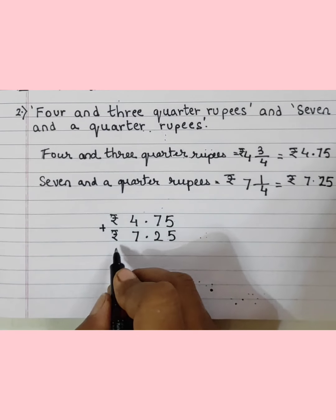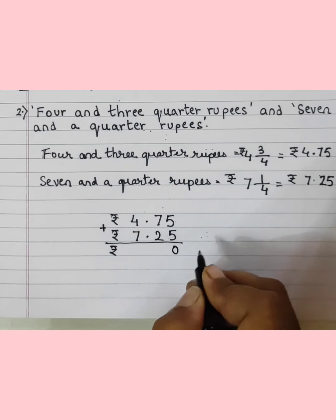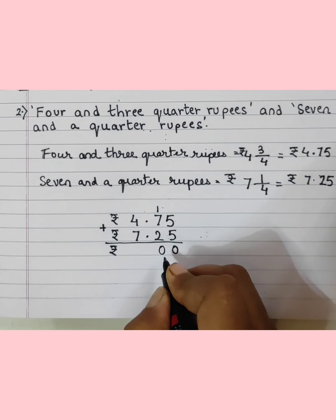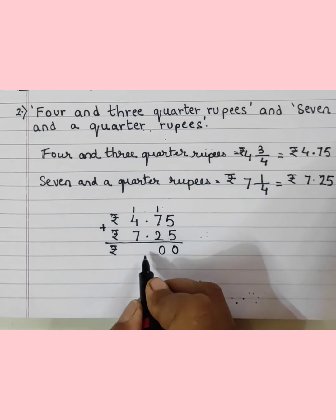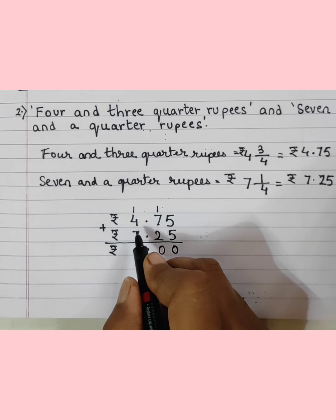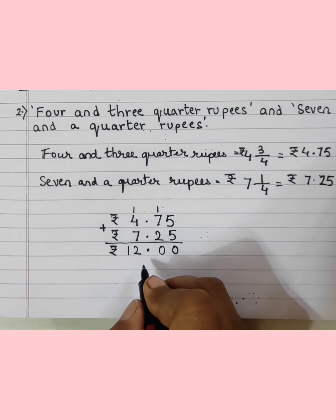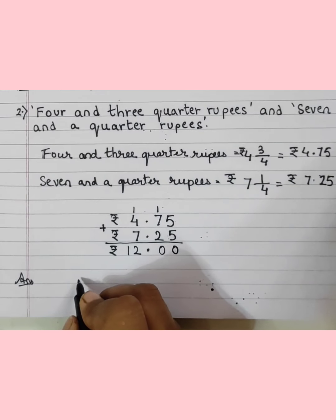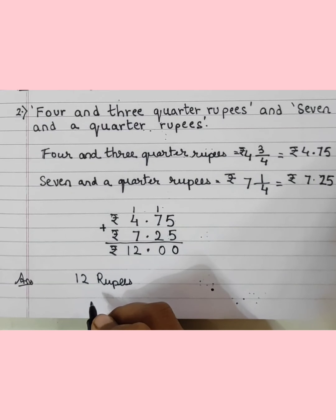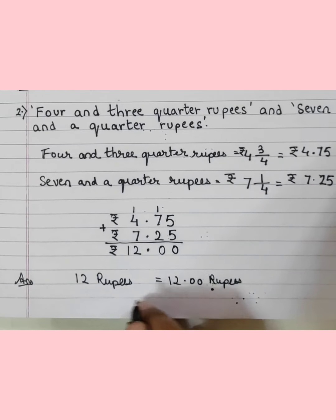5 plus 5 is 10, write 0 and carry 1. 2 plus 7 is 9, plus 1 is 10, write 0 and carry 1. Write the decimal point. 7 plus 4 is 11, plus 1 is 12. So the final answer is 12 rupees. You can also write it as 12.00 rupees.